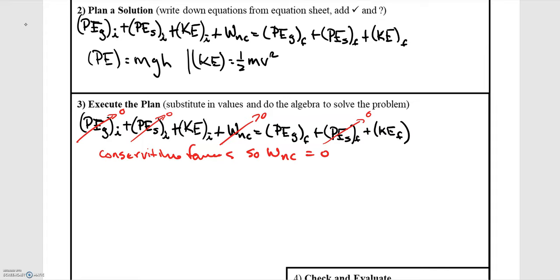The potential energy final, that's going to be a non-zero value because we're going to be at some height above our baseline point. So we'll keep that.